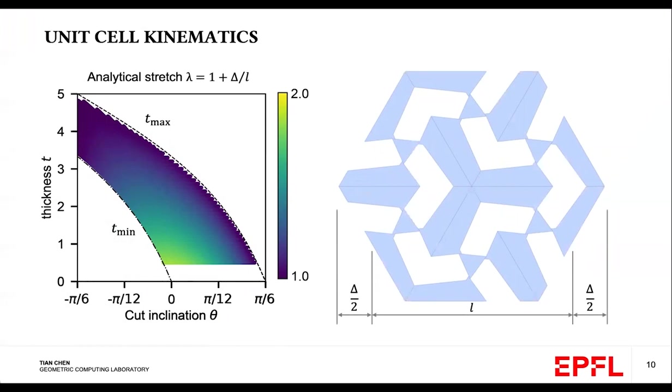Interestingly, we noticed for a given stretch, there are infinitely many parameterizations of t and theta that can achieve the stretch. And therefore, we need to come up with an additional criteria to select the best unit cell for a given stretch factor. And we also need to define what best means in this case.